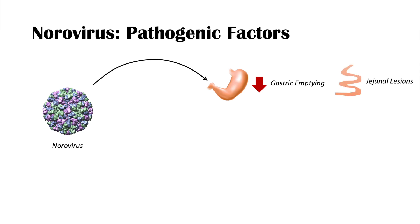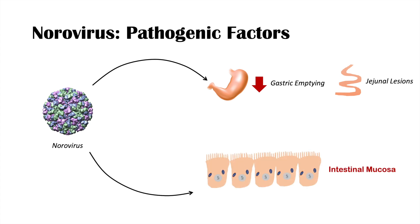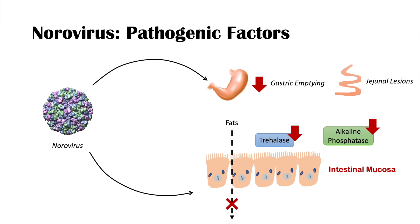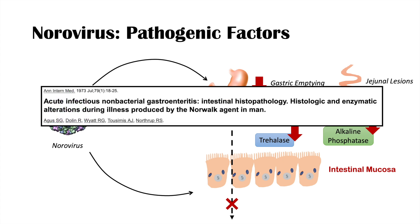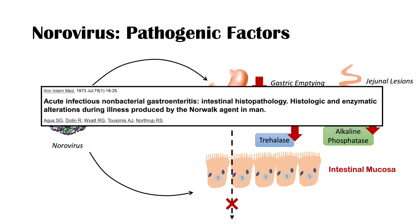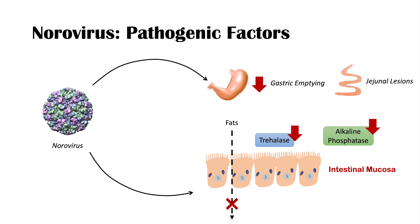The norovirus has also been shown to cause lesions in the jejunum, which is part of the small intestine. It also causes malabsorption by affecting the intestinal mucosa — it reduces the activity of enzymes like trehalase and alkaline phosphatase, and inhibits the absorption of fats. This is how the norovirus likely causes diarrhea: through decreased gastric emptying, jejunal lesions, and decreased enzyme activity leading to fat malabsorption.